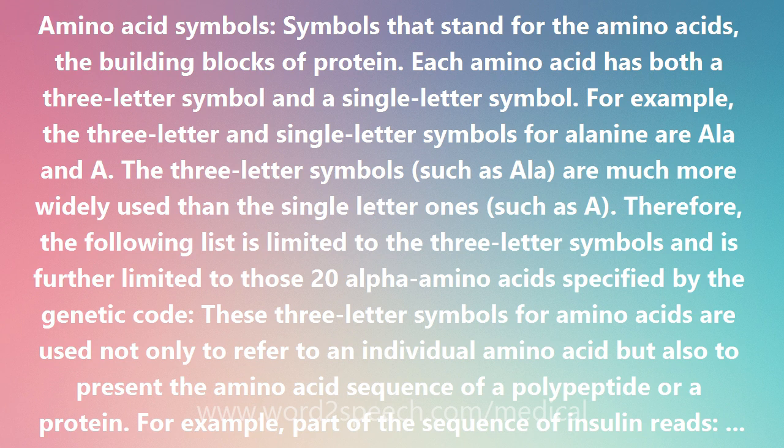These three-letter symbols for amino acids are used not only to refer to an individual amino acid but also to present the amino acid sequence of a polypeptide or a protein. For example, part of the sequence of insulin reads: GLY-ILE-VAL-GLU-GLN-CYS-CYS-THR-SER-ILE-CYS-SER-LEU-ALA-SER-ILE-VAL. The N-terminal residue of the polypeptide or protein is by convention always on the left, and the sequence reads from left to right toward the C-terminal residue.